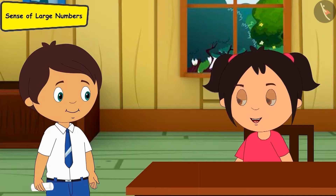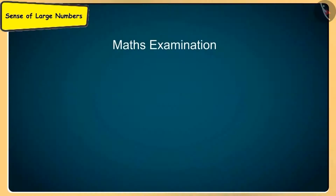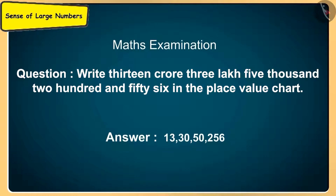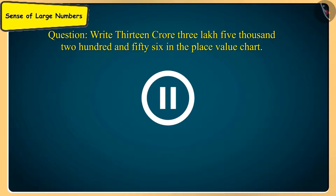Show me where you made a mistake, Didi. In this question I had to write 13 crore 3 lakh 5 thousand 2 hundred and fifty-six in the place value chart, and I wrote it like this. But madam has marked my answer wrong. If you want, you can pause the video here for a while and think about what the right answer could be.